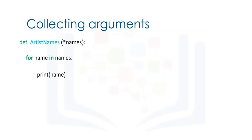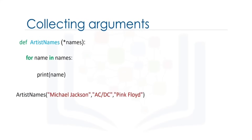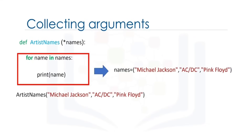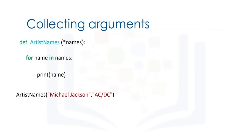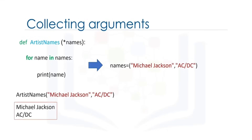Variadic parameters allow us to input a variable number of elements. Consider the following function — the function has an asterisk on the parameter names. When we call the function, three parameters are packed into the tuple names. We then iterate through the loop and the values are printed out accordingly. If we call the same function with only two parameters as inputs, the variable names only contains two elements and only two values are printed out.